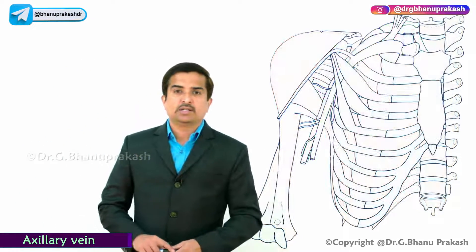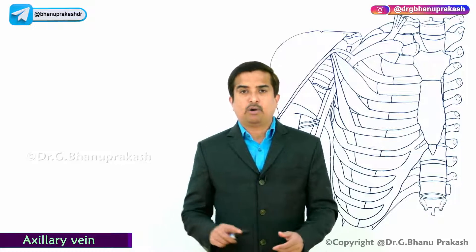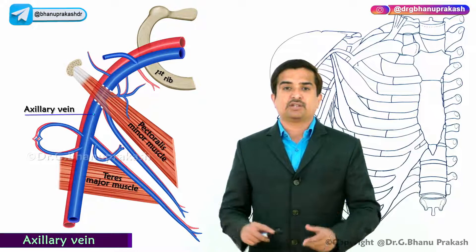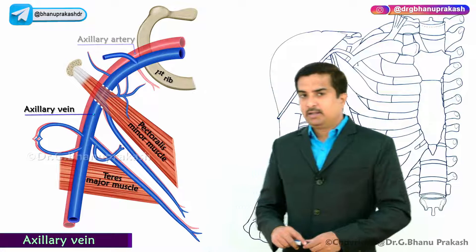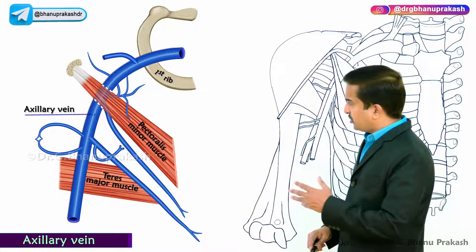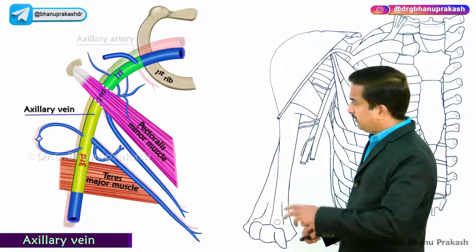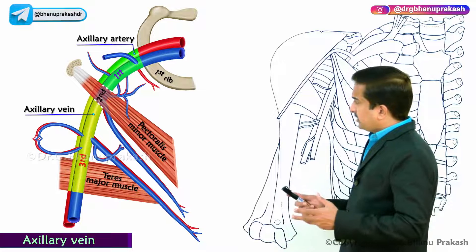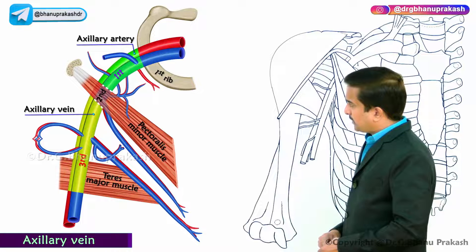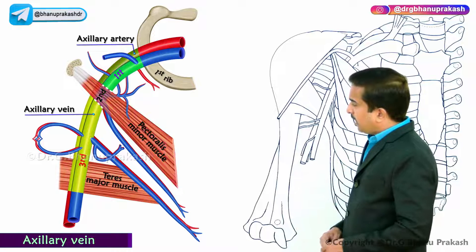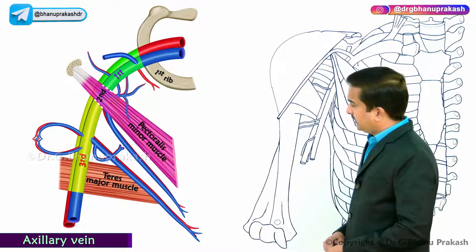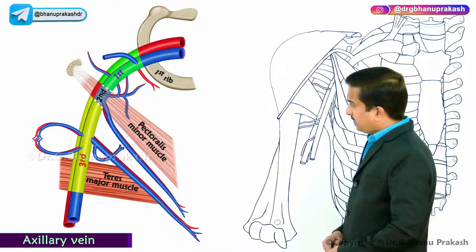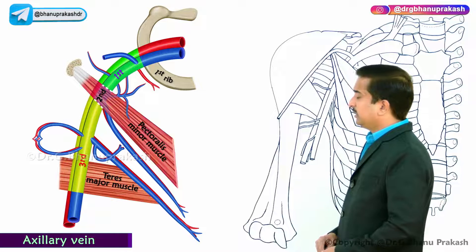The tributaries of the axillary vein correspond to the branches of the axillary artery. Both the axillary vein and artery are divided into three parts by the pectoralis minor muscle: the part proximal to the muscle is the first part, the part posterior to the muscle is the second part, and the part distal to the muscle is the third part.